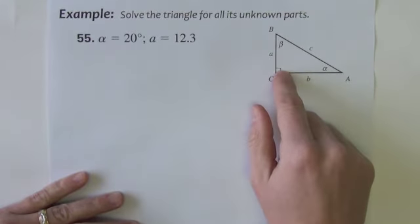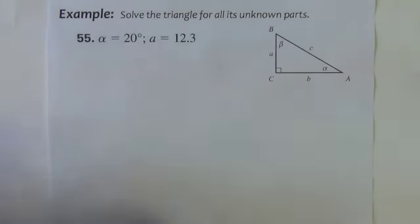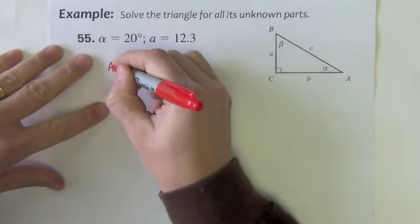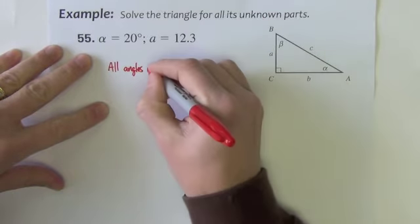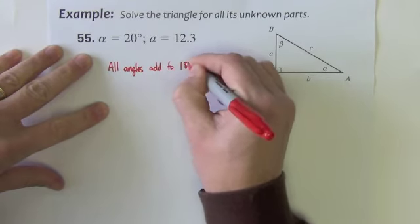The angle C is 90 degrees. So I might start with the angle beta. We know that in a triangle or hopefully we know all angles add to 180 degrees.